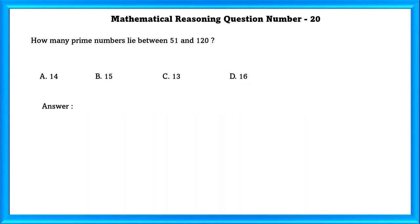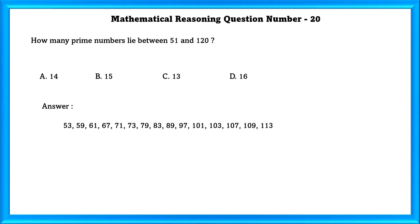Question No. 20: How many prime numbers lie between 51 and 120? The prime numbers are 53, 59, 61, 67, 71, 73, 79, 83, 89, 97, 101, 103, 107, 109, and 113. So there are 15 total prime numbers.